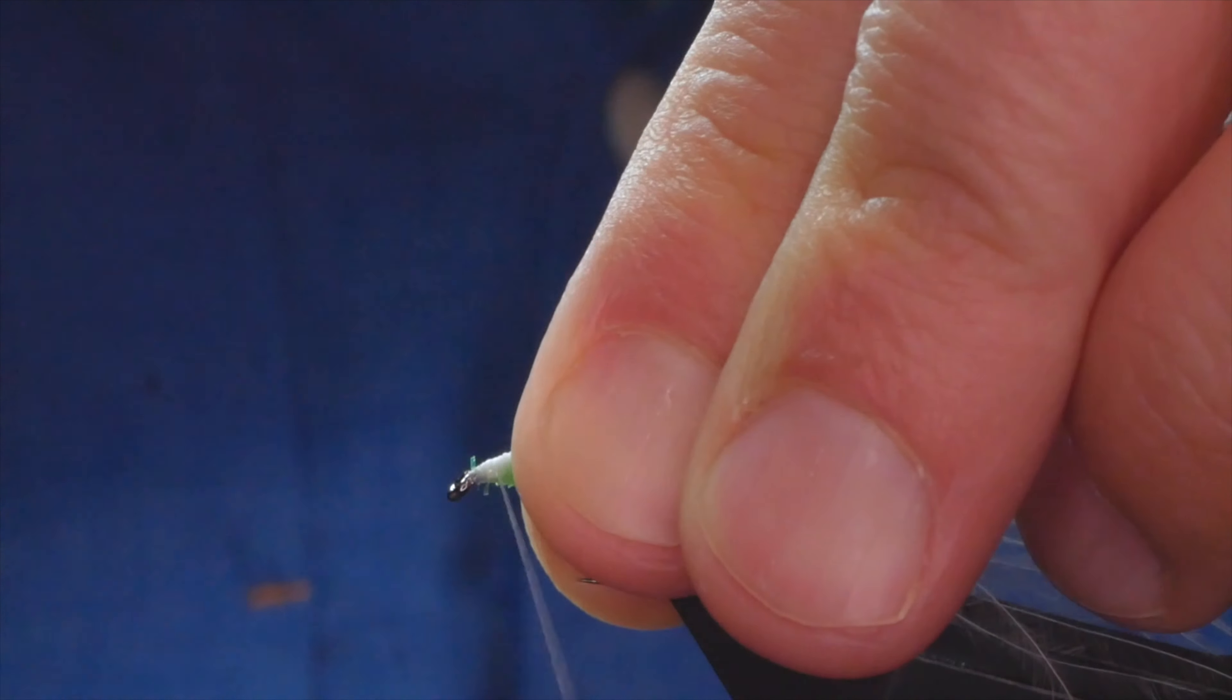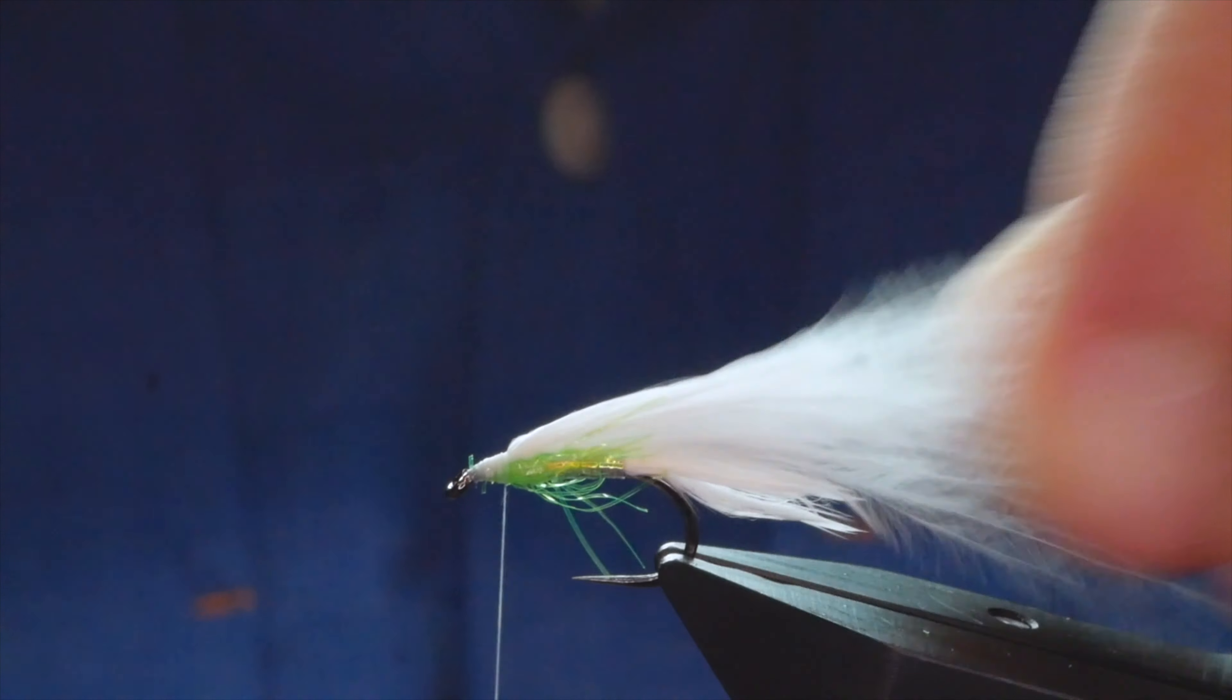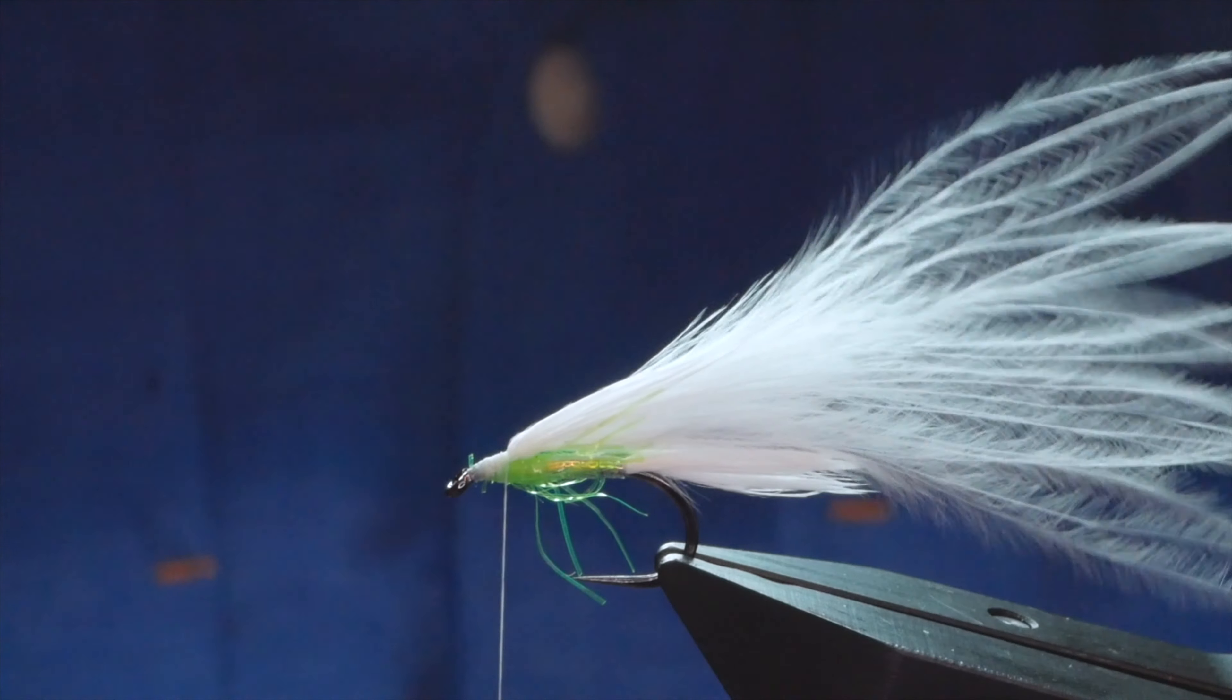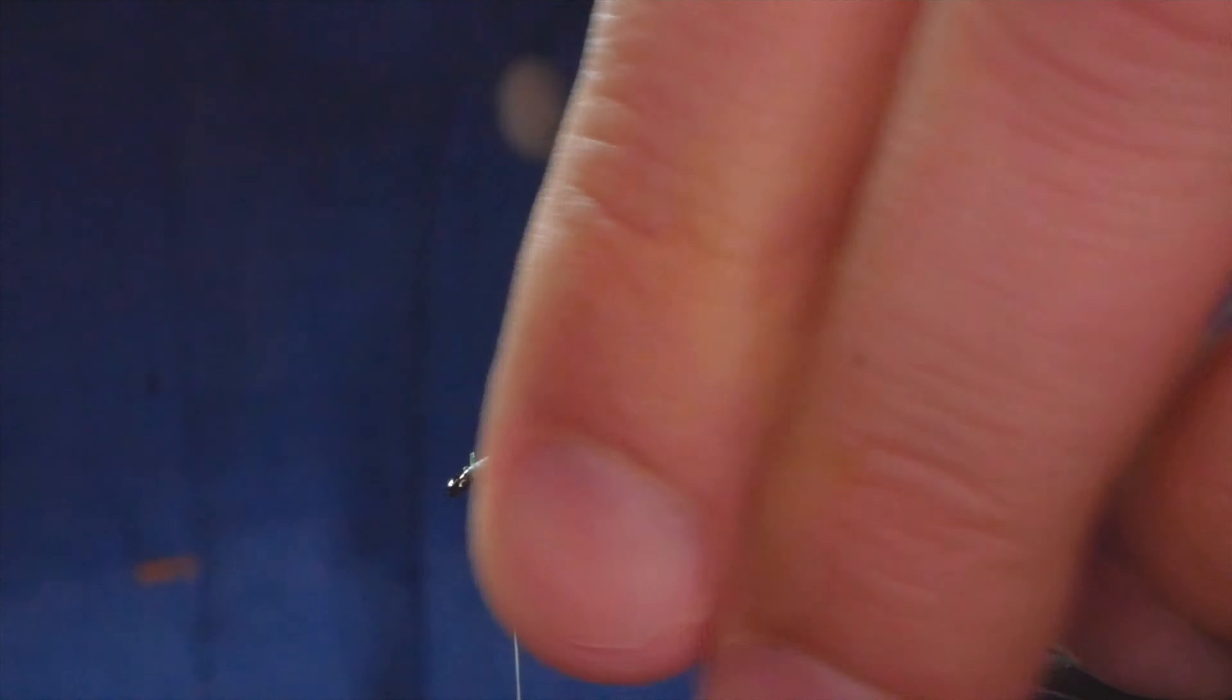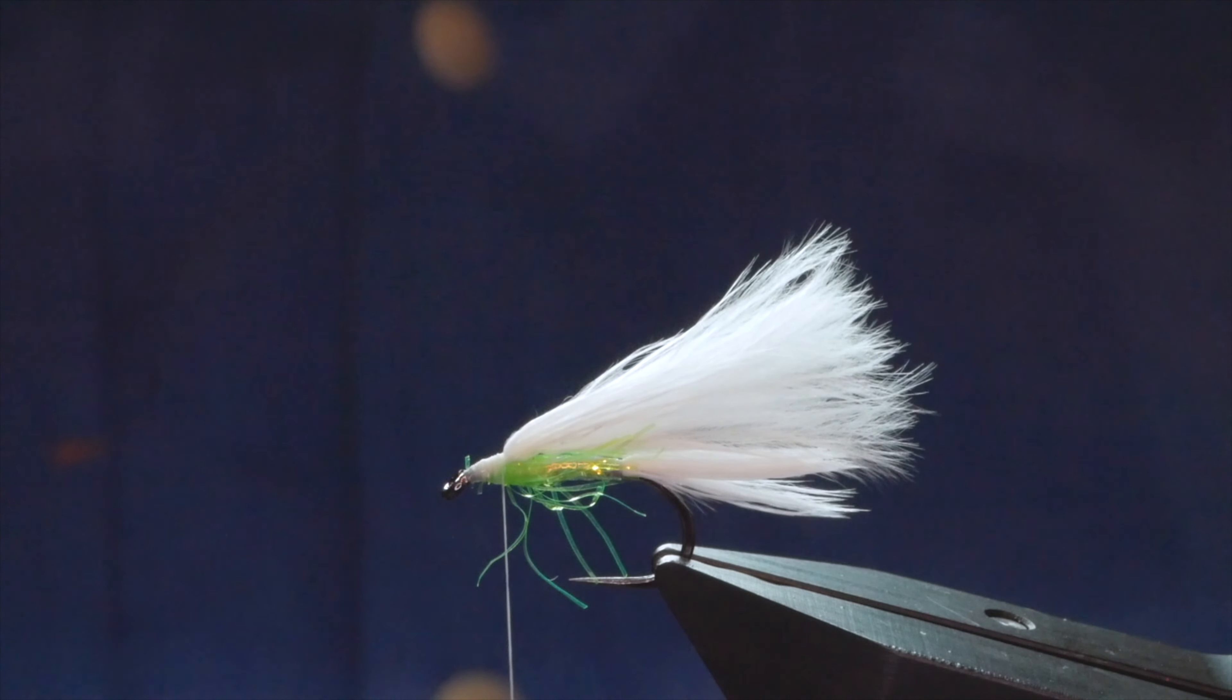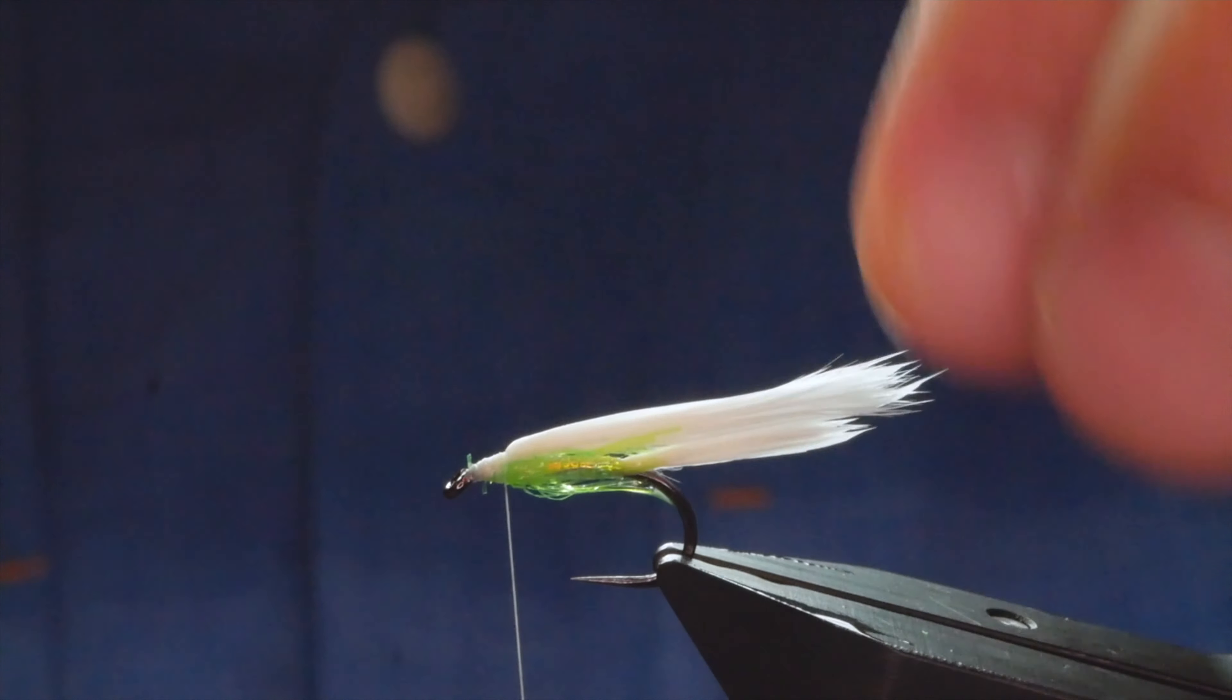Once you've got that in place and it's locked into position, you can come in with your thumb and forefinger of your right hand, pinch the wing and pull it away. Before I come in to do my booby eyes, I want to simply sweep everything back.